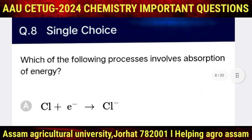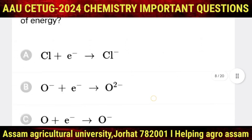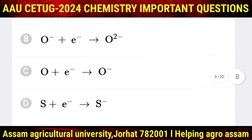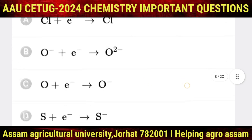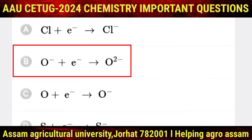Question number 8: which of the following processes involves absorption of energy? Options include Cl + e- → Cl- and O- + e- → O2-. The correct option is B: O- + e- → O2-.